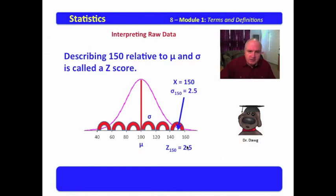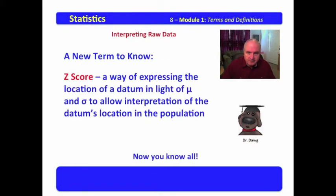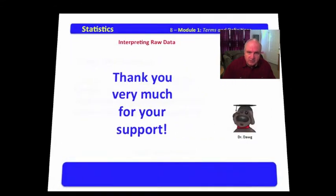Let's go back to this diagram. The Z-score for 150 is 2.5. That means that this raw data point, 150, is 2.5 standard deviations above the mean. That is really a cool definition.